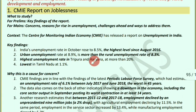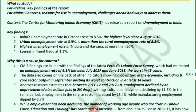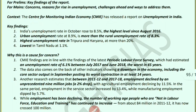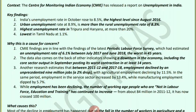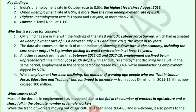The first topic is the CMIE report on joblessness. The Centre for Monitoring Indian Economy has released a report on unemployment in India. In October, the unemployment rate rose to 8.5%, the highest level since August 2016. Urban unemployment is 8.9% while rural unemployment is 8.3%. The highest unemployment is in Tripura and Haryana at over 20%, and the lowest is in Tamil Nadu at 1.1%.